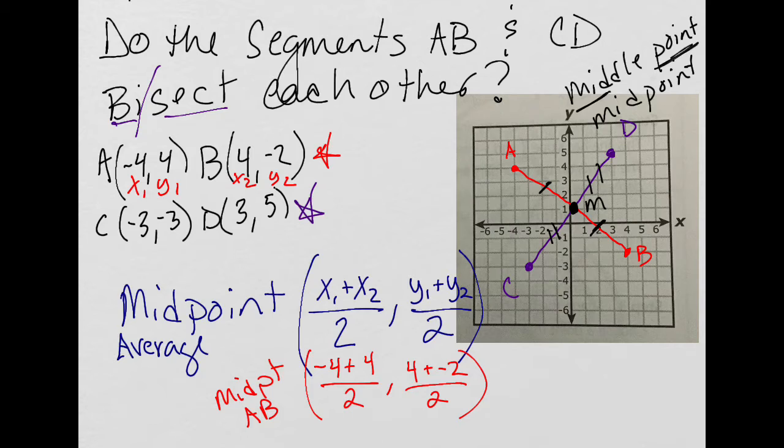PEMDAS tells me to do the addition on top first. So for the x's, negative four plus four is zero, and then zero divided by two is zero. For the y's, four plus a negative two is two, and then two divided by two is one. So the midpoint of AB is at zero, one.